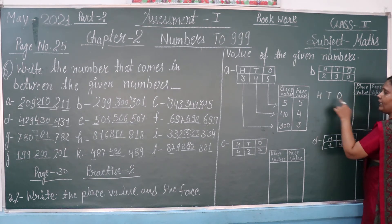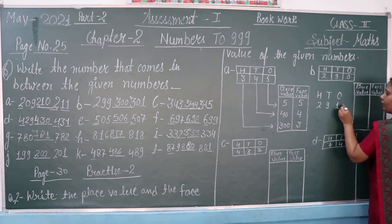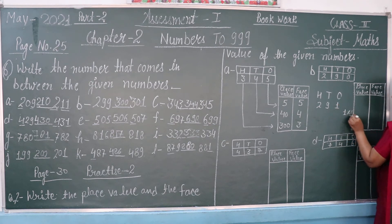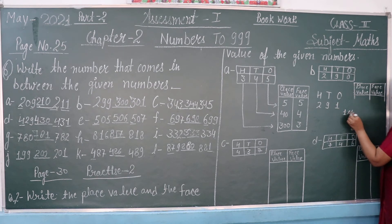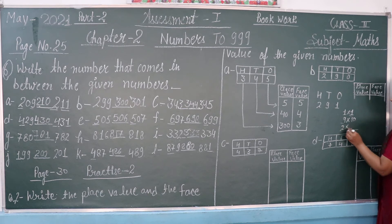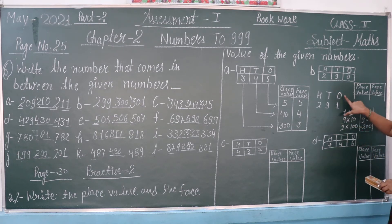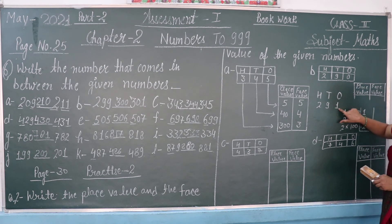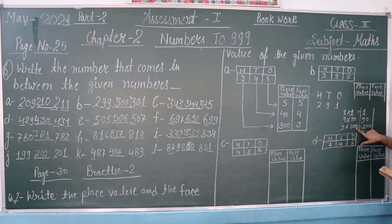As you know, we have discussed this already. Suppose this number is 291. The ones value: 1 is equal to 1 × 1 = 1. The tens value: 9 × 10 = 90. The hundreds value: 2 × 100 = 200. So place values are 1, 90, and 200, because 1 is in the ones place, 9 is in the tens place, and 2 is in the hundreds place.